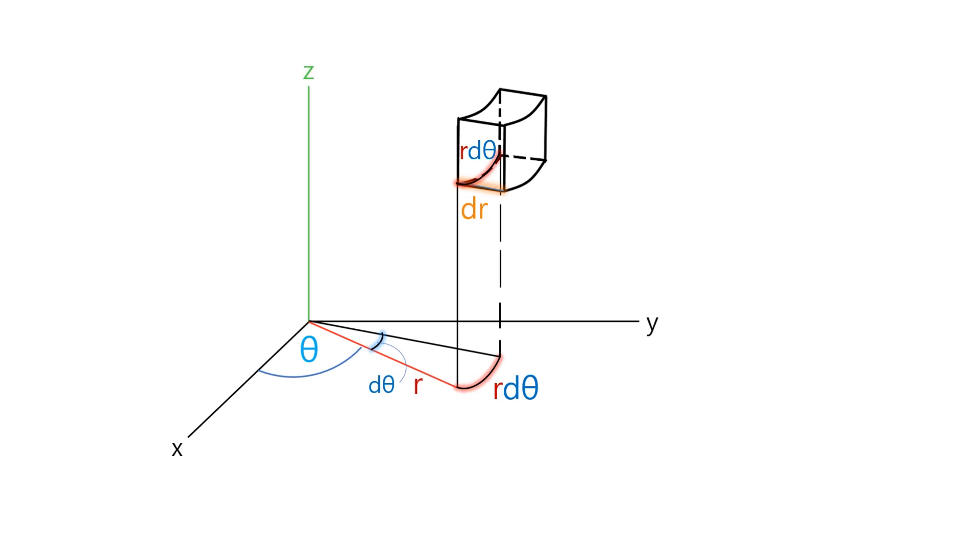And on the left side, look at that z-axis. Referred to the name of the axis, the length of this green line of minute volume is expressed by dz.